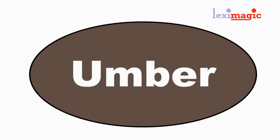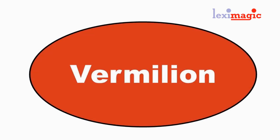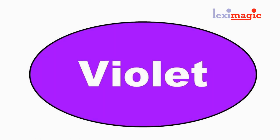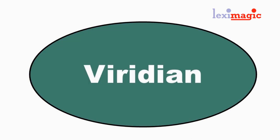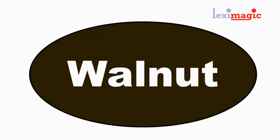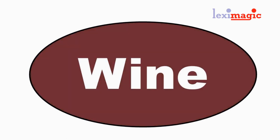Umber: a shade of brown darker than ochre. Vermillion: a vivid red or slightly orangish red. Violet: a bluish purple color. Viridian: a bluish green color. Walnut: a dark brown. Wine: a dark purple red.